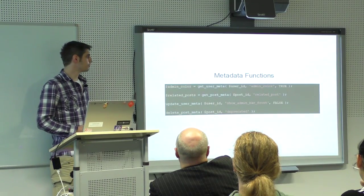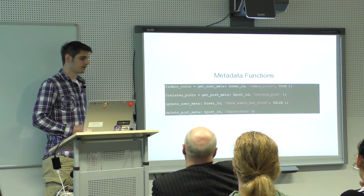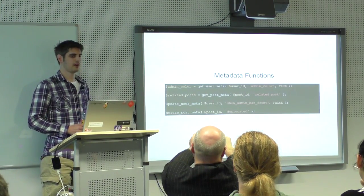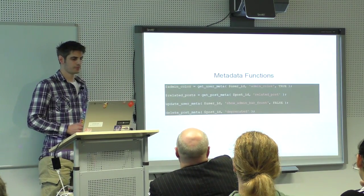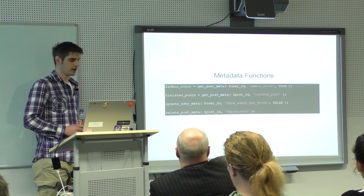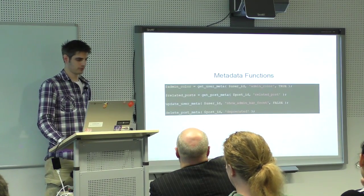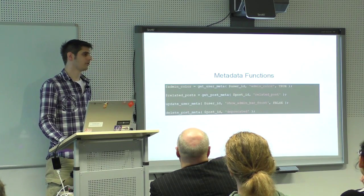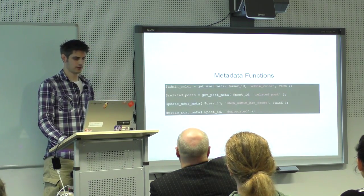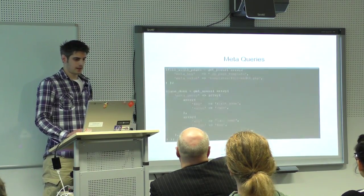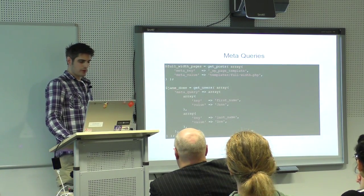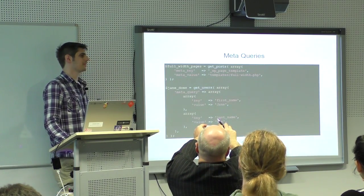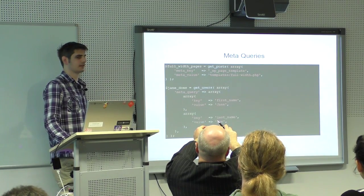Of course, there are API functions for metadata. For a specific user ID and a meta key I can fetch a value. I can get user meta, post meta, and I can update and delete information. In every function, some object ID is involved — either a post ID or a user ID. As with taxonomy or term queries, I can also query objects — posts and users — using metadata information.